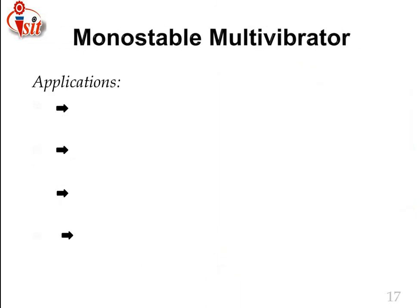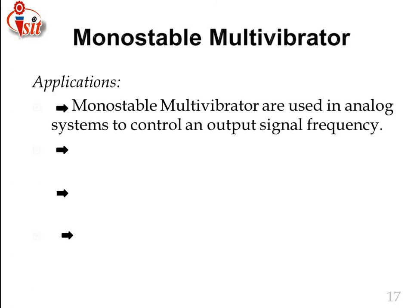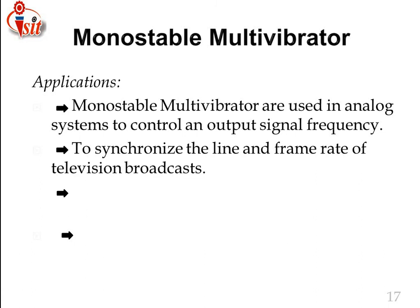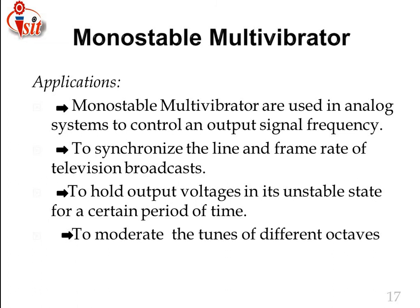Applications of the monostable multivibrator: it is used in analog systems to control output signal frequency, to synchronize the line and frame rate of television broadcasts, to hold the output voltage in its unstable state for a certain period of time, and to moderate the tunes of different octaves in electronic organs.